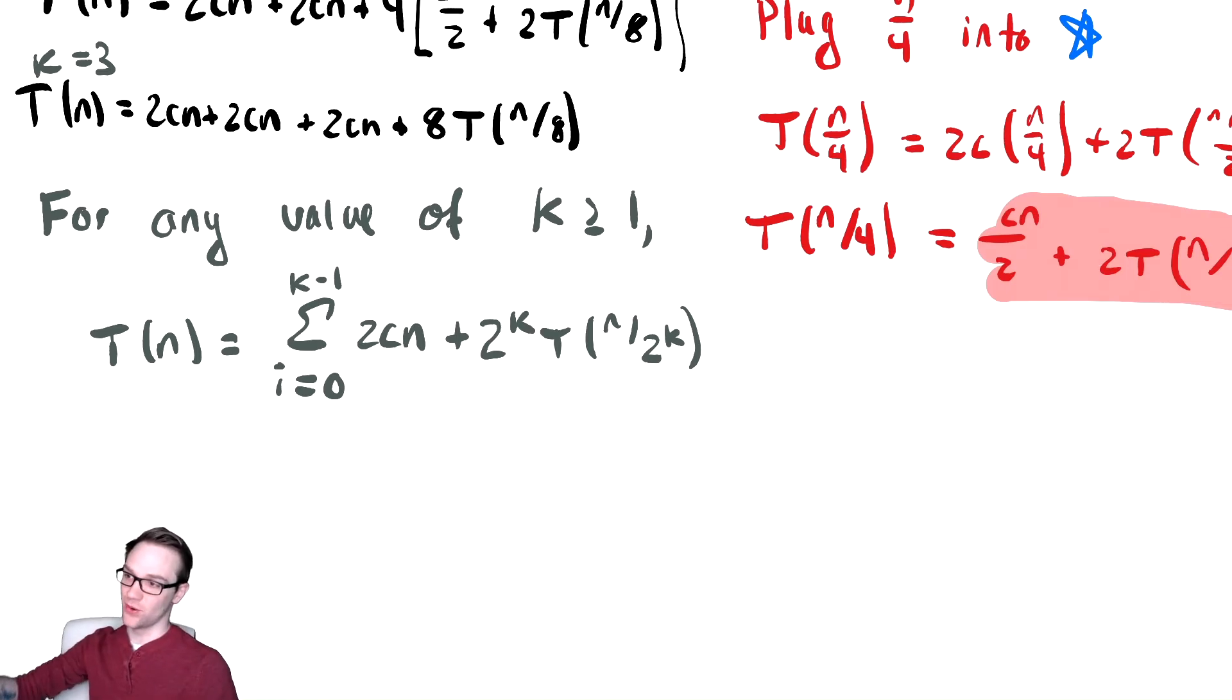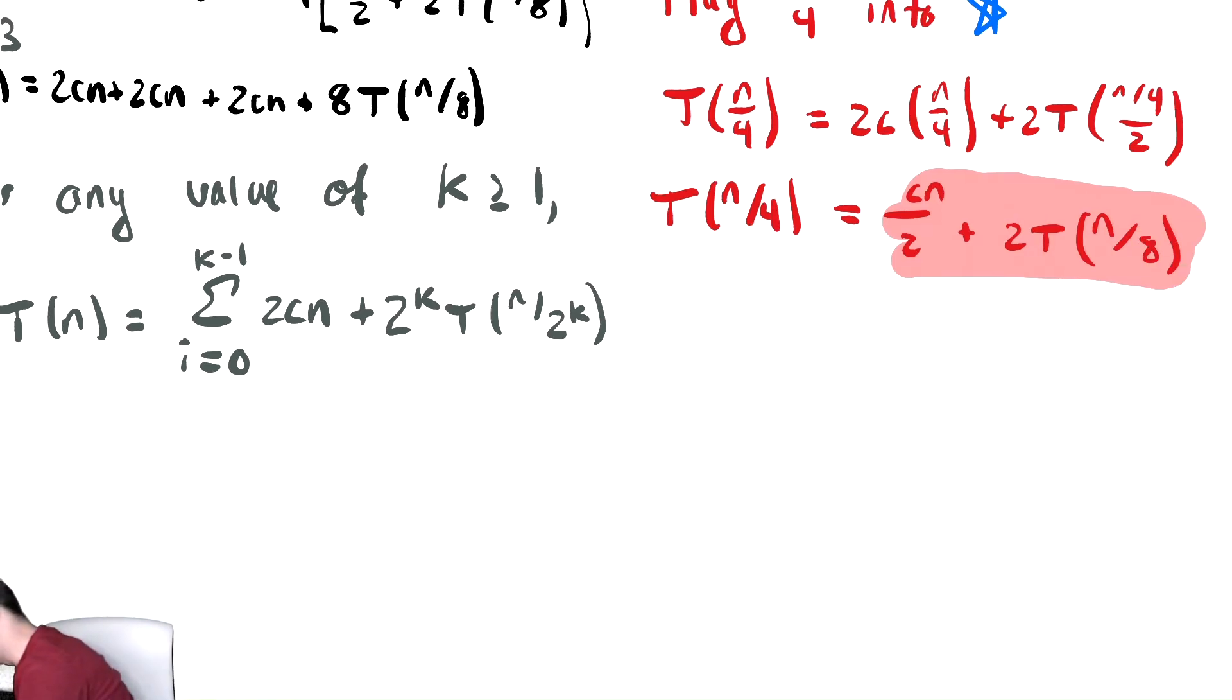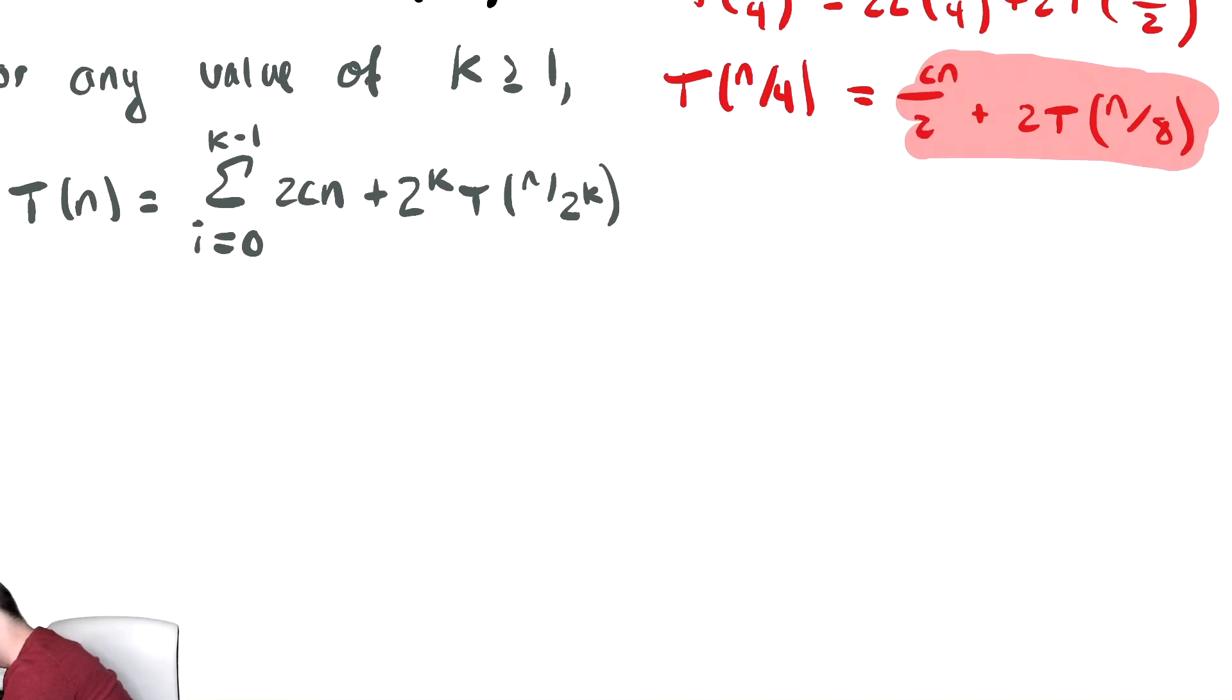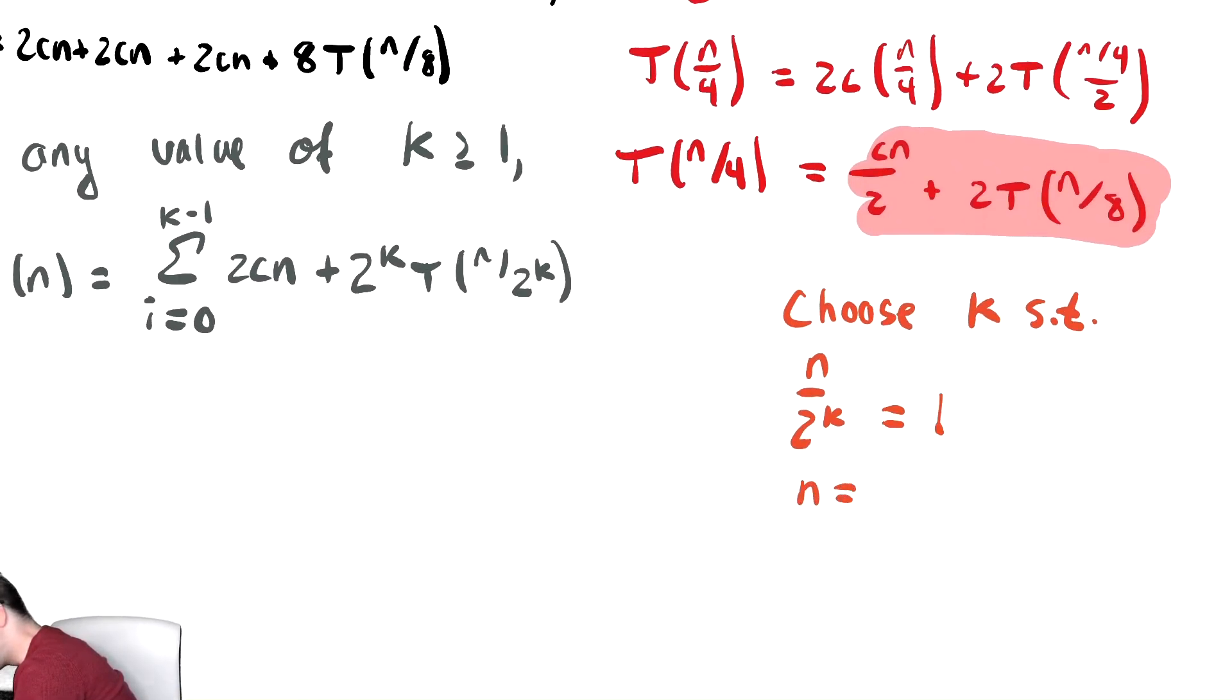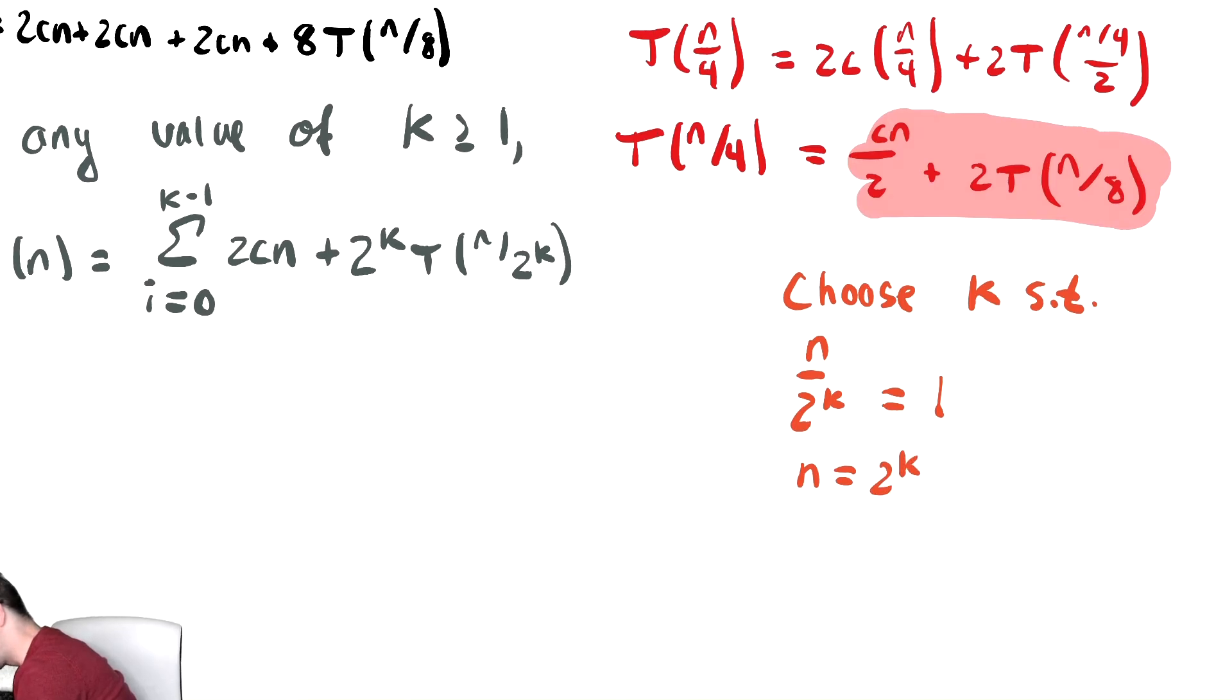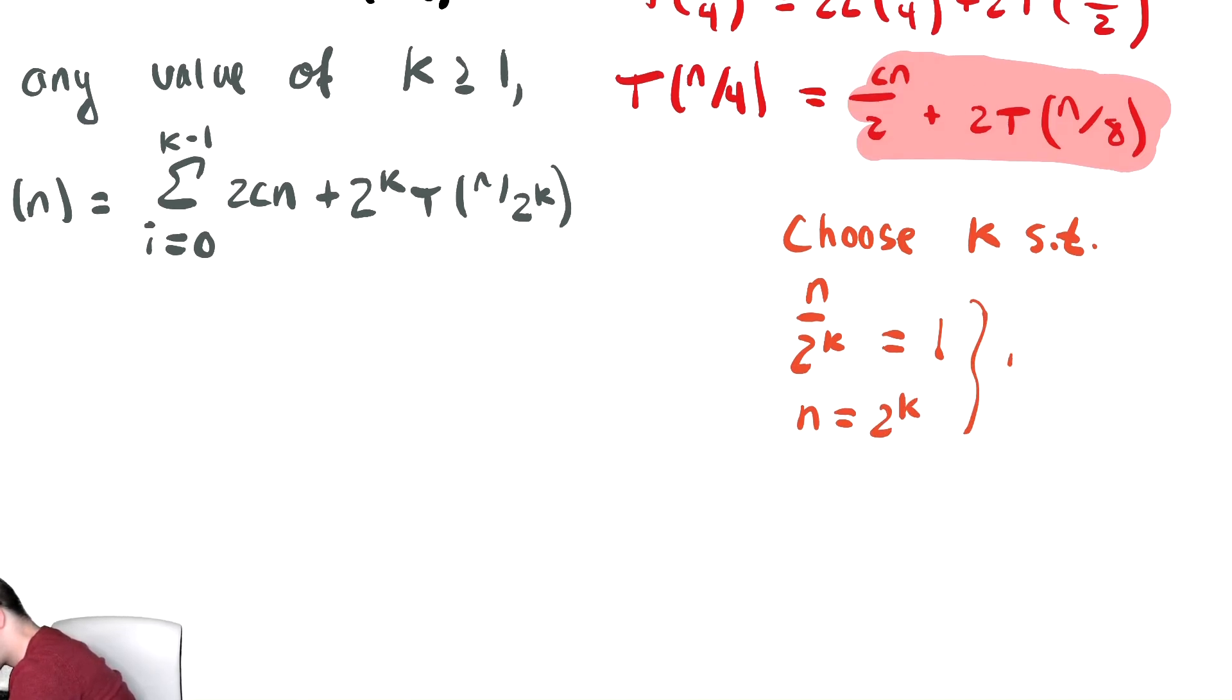We need to choose k to satisfy the base case. Off to the side in orange, we choose k such that n divided by 2 to the k equals the base case, which was 1. Solving for k, we get n equals 2 to the k, and then k equals log base 2 of n by taking the log base 2 of both sides.